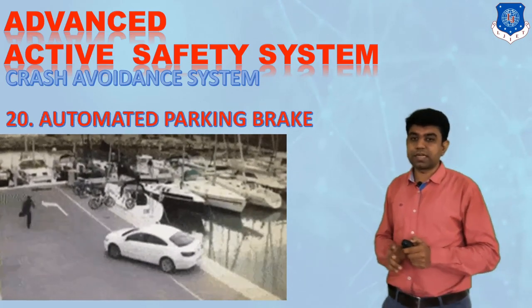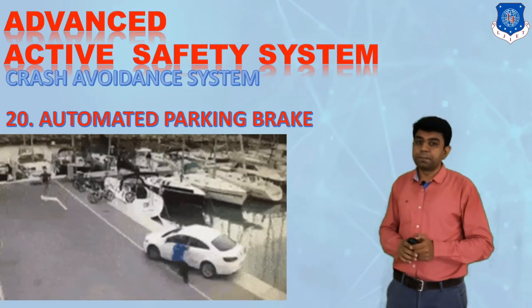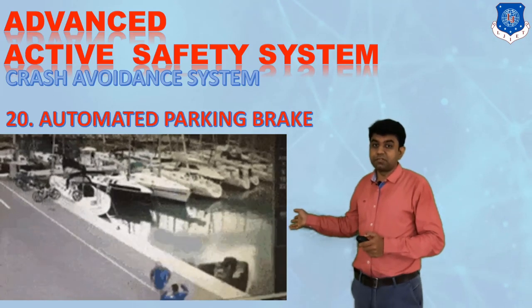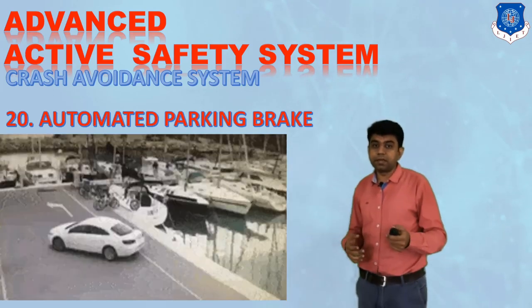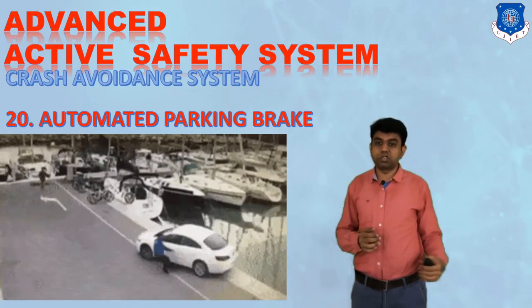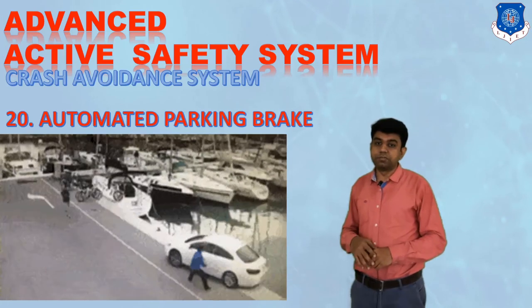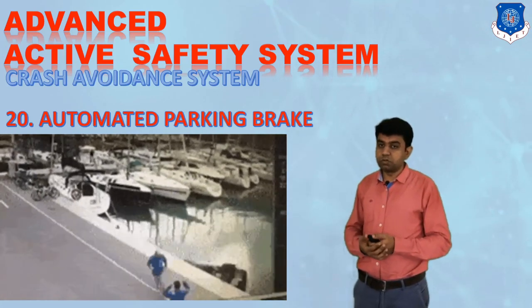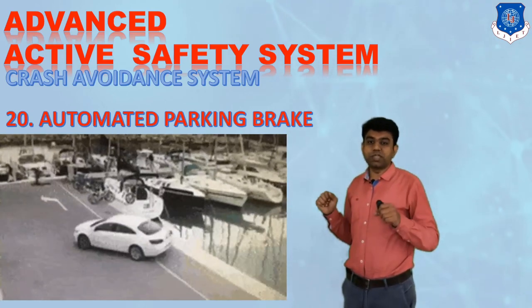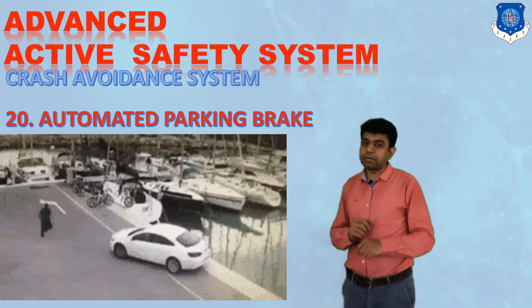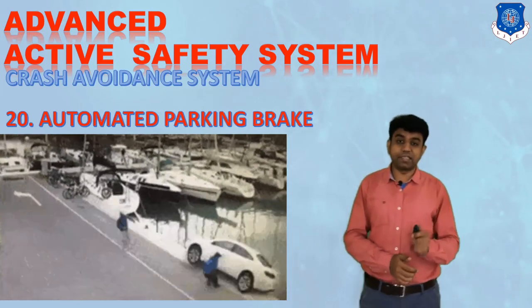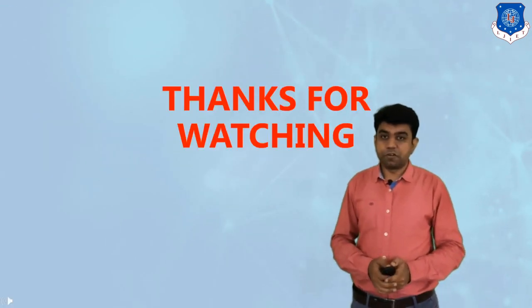The twentieth system is the automated parking brake. Sometimes a driver may exit the car and forget to apply the parking brake, and if a slope is present, the vehicle can roll away causing major damage. With the automated parking brake, as soon as you stop the vehicle, the parking brake is applied automatically. That covers all the different advanced active safety systems. Thanks for watching.